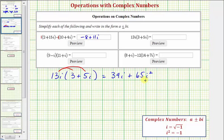But a complex number has to be in the form of a plus or minus bi. We can't have i squared, but remember i squared is equal to negative one. So we have 39i plus 65 times negative one, which is equal to 39i minus 65.